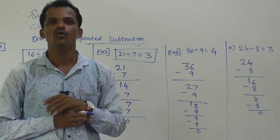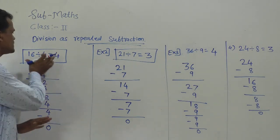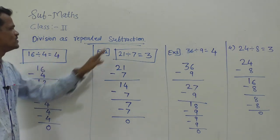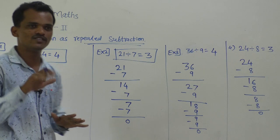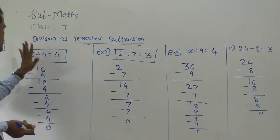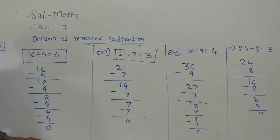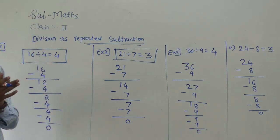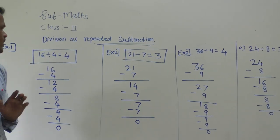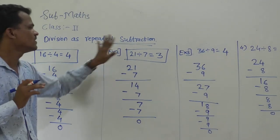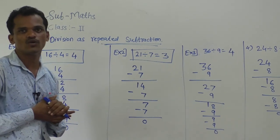Today we have learned how to solve a division example by using repeated subtraction. It is very simple. Once again, I am explaining the first example: 16 divided by 4. We have to find out the quotient and solve this example by using repeated subtraction.